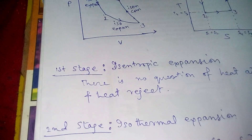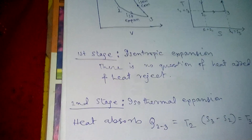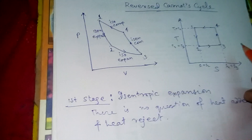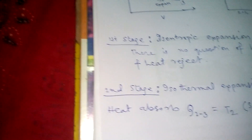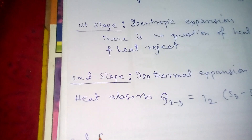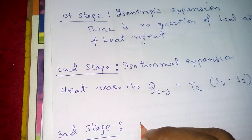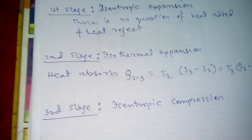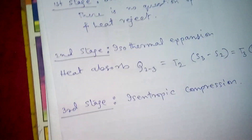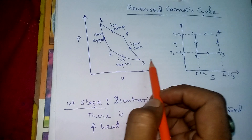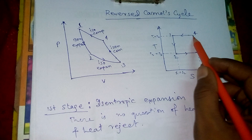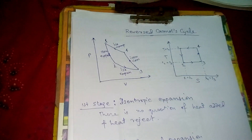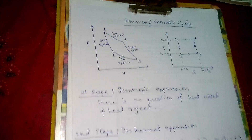The third stage is isentropic compression, process 3 to 4. Since this process is isentropic compression, it is an isolated process, so there is no heat added and no heat rejected in this stage.